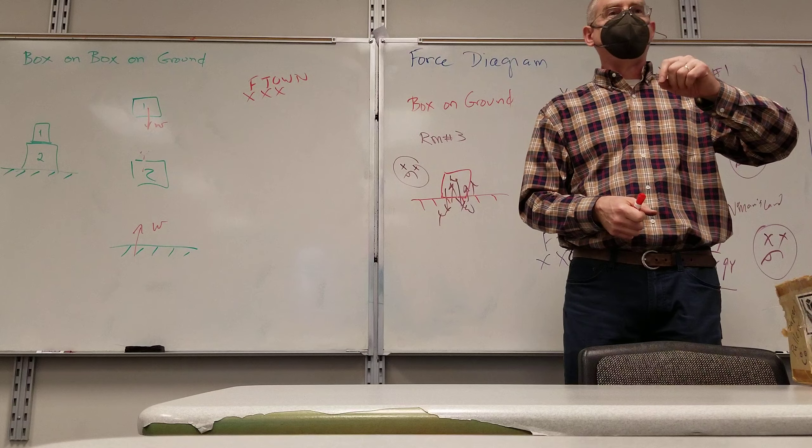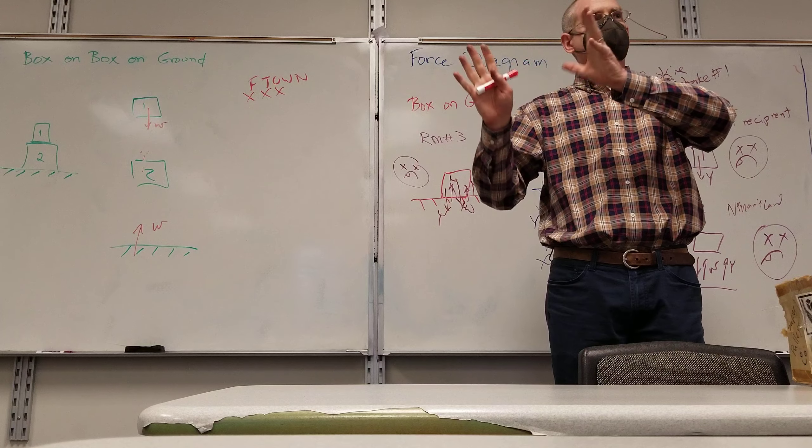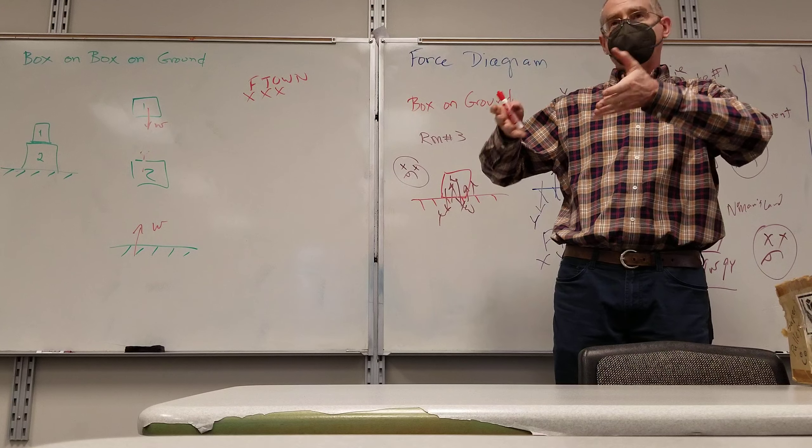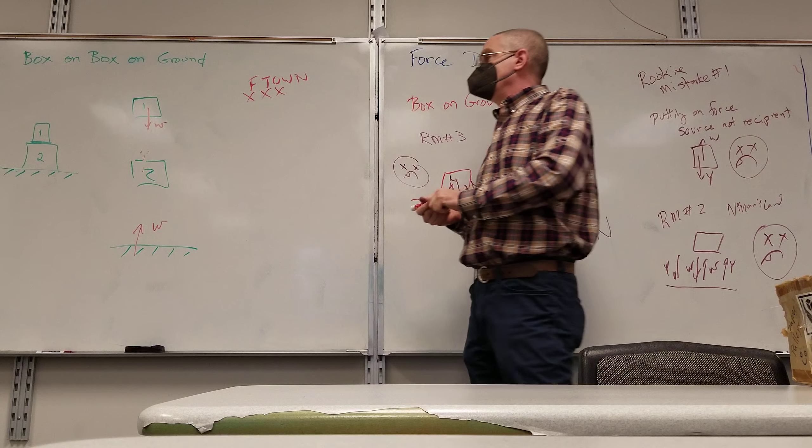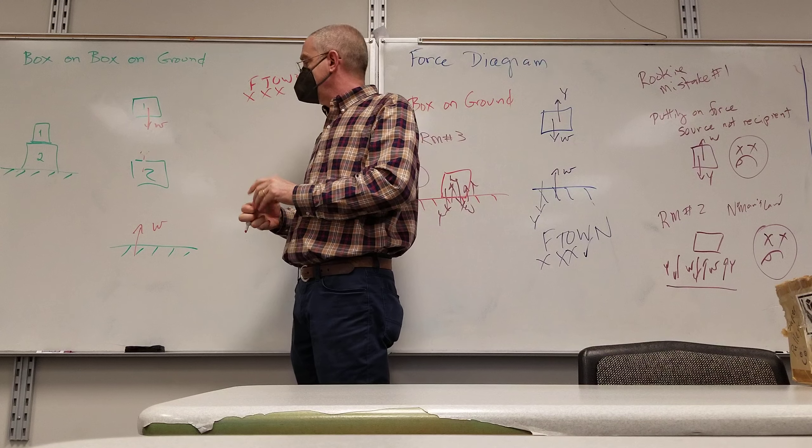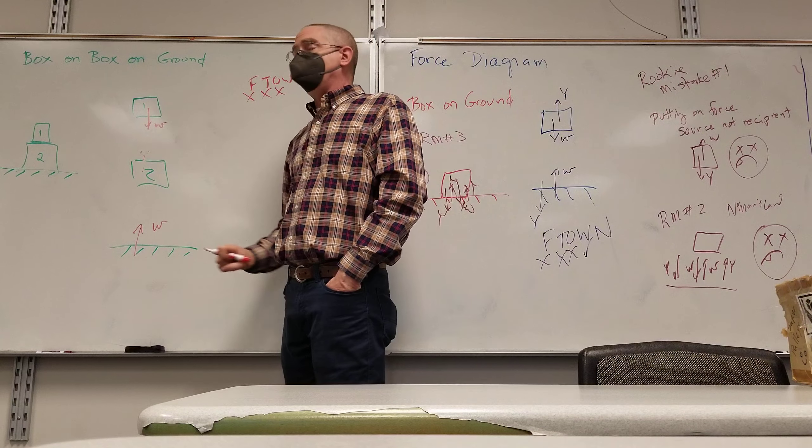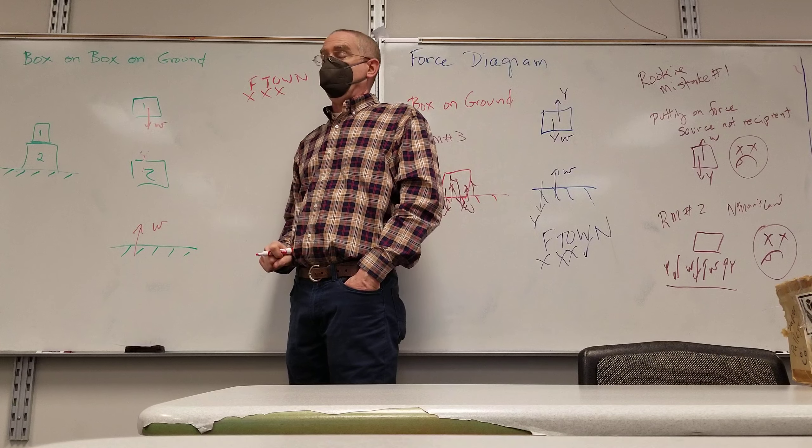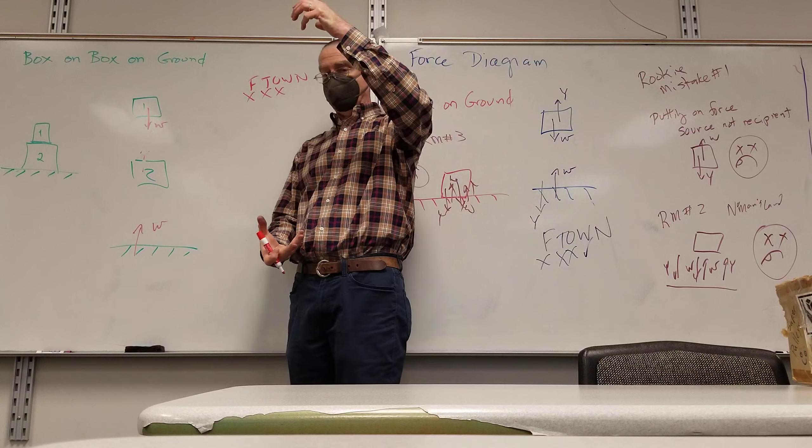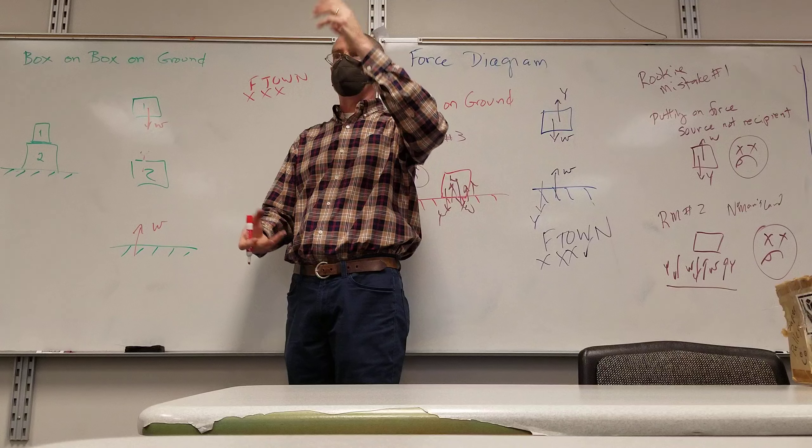Now, if you've drawn an arrow up and you're writing in ink, you don't have to erase it. We're going to label it something else. There is a force acting up. It's not weight. So there's a weight between one and the ground.